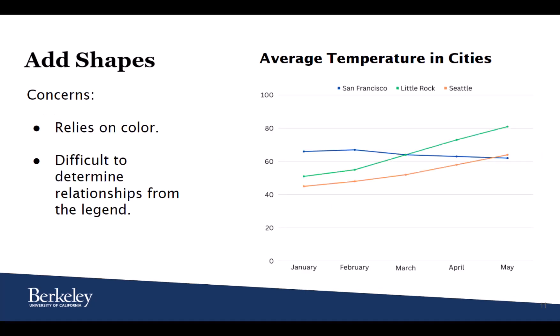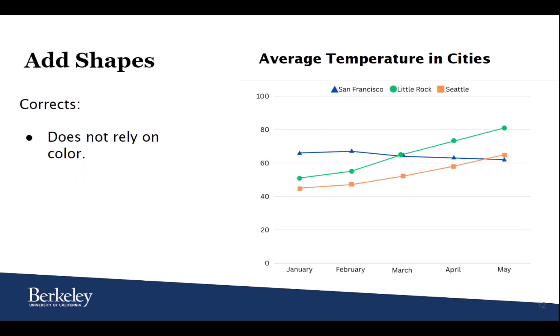Again, we can add shapes to our charts to better distinguish patterns and relationships. In this line chart, we see the same three cities and their average temperatures from January to May, but we are reliant on color to understand which city is which. This makes it difficult to determine the relationship between the line graph information and the legend. By adding shapes to the line graph, we can easily determine which city is which in our graphic. This new chart does not rely on color to understand the information.